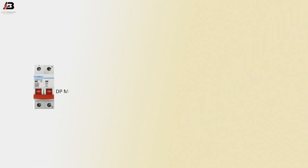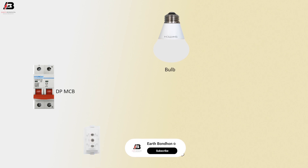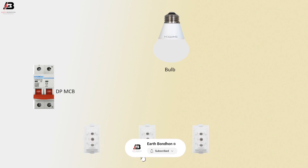So viewers, let's start. Double pole MCB. Valve, Switch1, Switch2, Switch3, and Switch4.